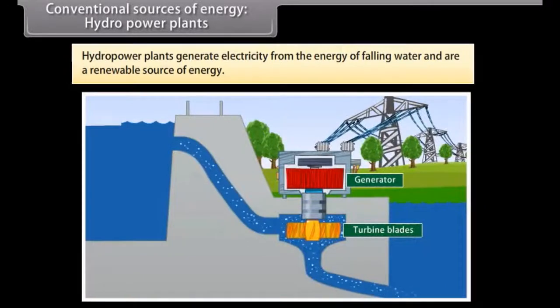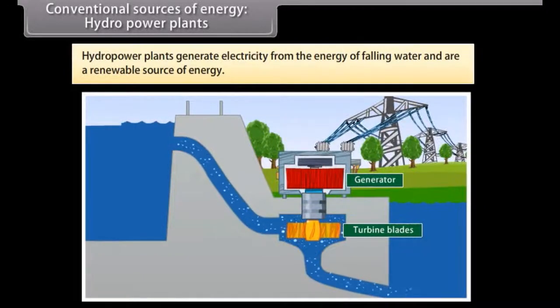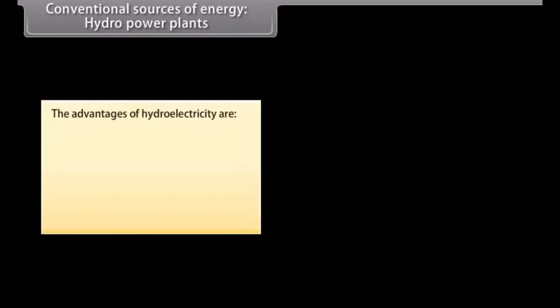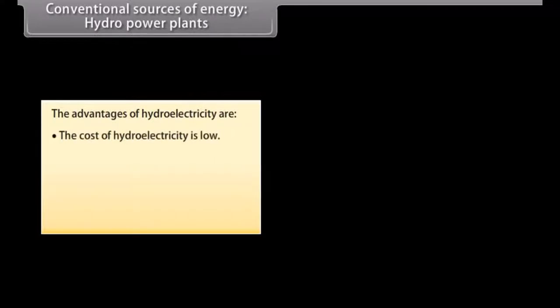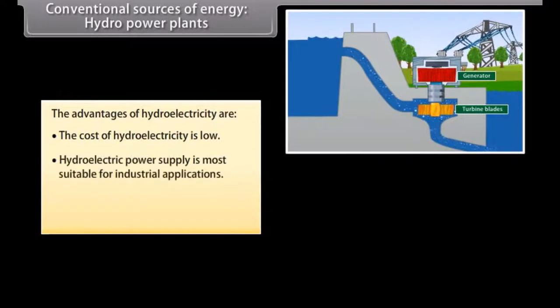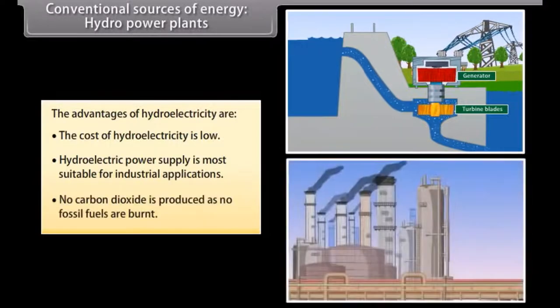Conventional sources of energy: Hydro power plants. Hydro power plants generate electricity from the energy of falling water. Hydro power is a renewable source of energy. The advantages of hydroelectricity are: the cost of hydroelectricity is low, hydroelectric power supply is more suitable for industrial applications, and no carbon oxide is produced as no fossil fuels are burnt.